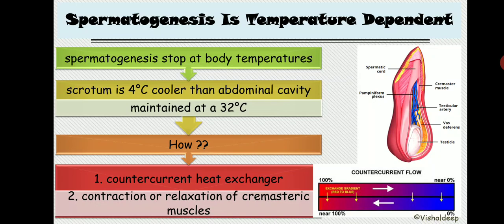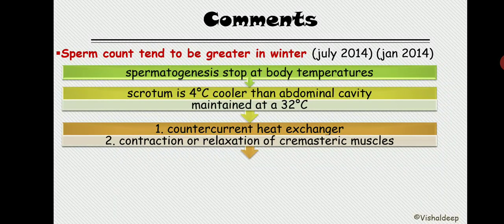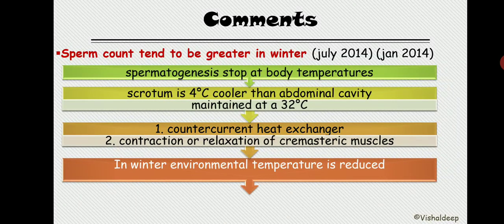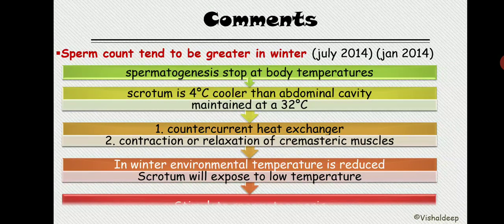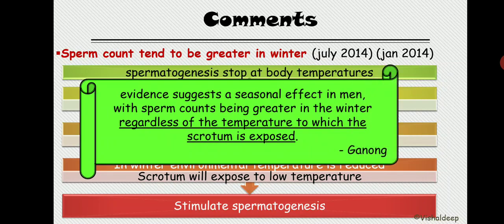One question commonly asked from this topic is that sperm count tends to be greater in winter. Spermatogenesis stops at body temperature; the scrotum is four degrees cooler than the abdominal cavity, maintaining 32 degrees Celsius by two mechanisms: counter-current heat exchange and contraction/relaxation of the cremaster muscle. In winter, environmental temperature is reduced, the scrotum is exposed to lower temperature, which stimulates spermatogenesis. Ganong states: 'There is evidence suggesting a seasonal effect in men, with sperm count being greater in winter regardless of the temperature to which the scrotum is exposed.'